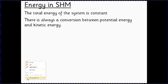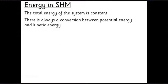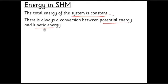The crucial thing to understand is that the total energy of the system is constant. As long as we ignore energy leaving the system, the total energy stays the same. There's always a conversion between potential energy at the ends of the oscillation and kinetic energy, which is greatest at the center because that's when the object is moving fastest.